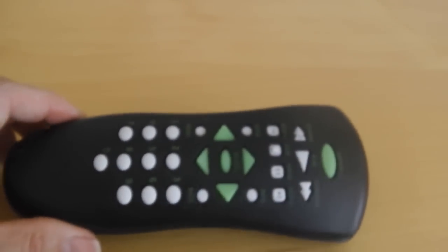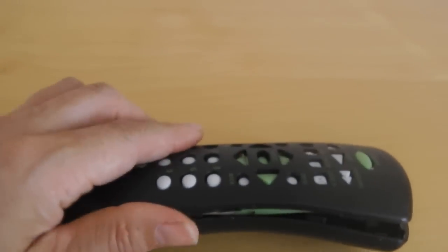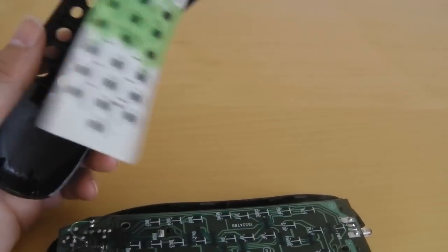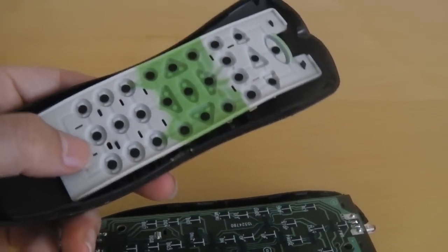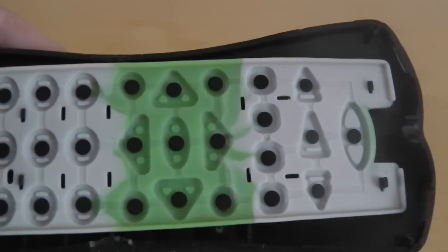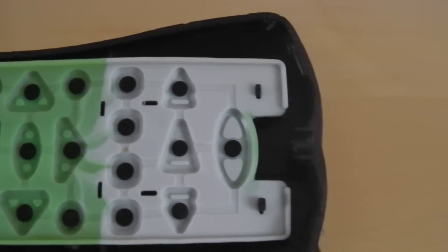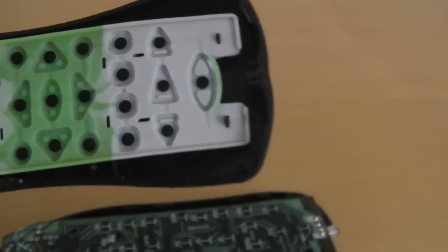So the remote will open quite easily after that. You just pull off the lid here, and obviously you've got the rubber tactile pad with the carbon inserts on to make the contacts.